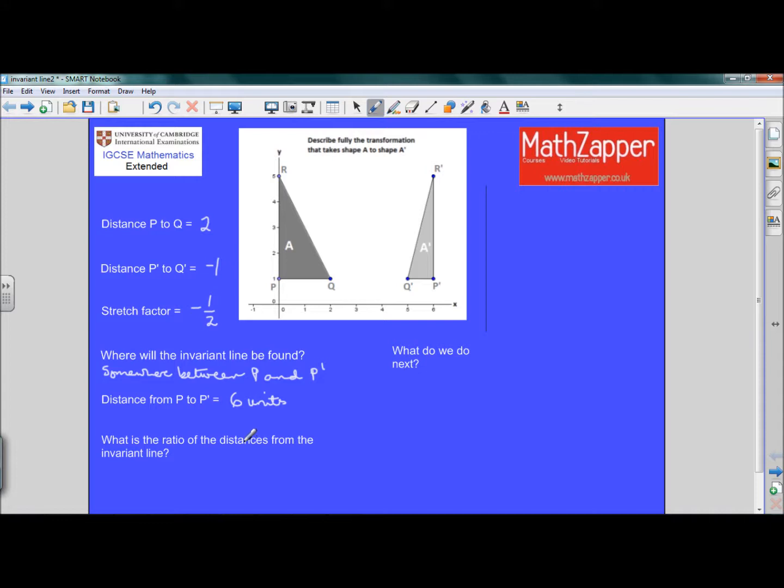Well, it's going to be a ratio of 1, which is related to the first shape A, and a half, which is related to the second shape A dash. Remember, A dash is exactly half the area of A. So if we say A is 1, we can say that A dash is going to be a half. So the ratio is 1 to a half.